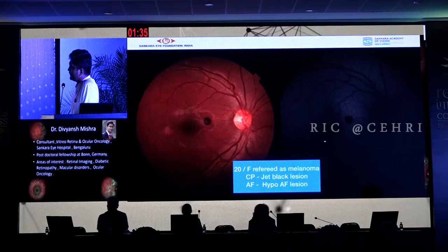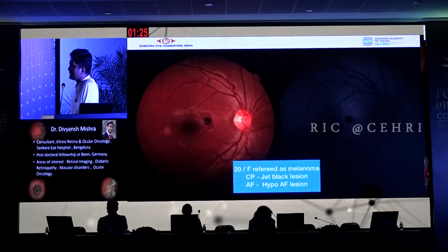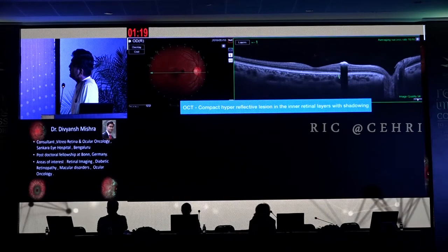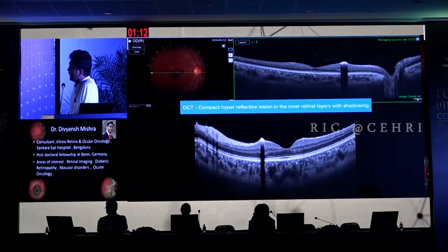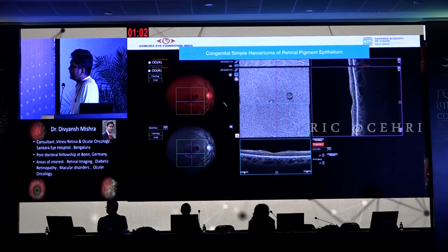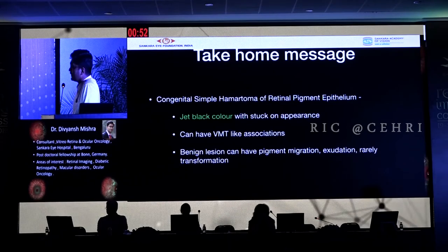This was a lady referred from Bangladesh, diagnosed as melanoma for further management. This is a clear-cut case, as it has a jet-black colored pigment with a stuck-on appearance. The OCT shows dense material causing complete back-shadowing, like a cut-out on the scan. The diagnosis is congenital simple hamartoma of the retinal pigment epithelium, diagnosed by its jet-black pigmented lesion. It can be associated with VMT, pigment migration in adjacent areas, exudation, and rarely transformation.